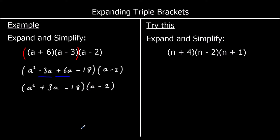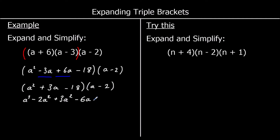So a squared times a is a cubed. a squared times negative 2 is negative 2a squared. 3a times a is 3a squared. 3a times negative 2 is negative 6a. Negative 18 times a is negative 18a. And negative 18 times negative 2 is positive 36. So we've expanded — we just need to simplify now.